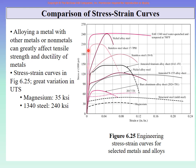Any curve that is high in the stress direction represents a very strong material. Going in the strain direction, any material with a very large strain value is highly ductile; materials with moderate strain are medium ductile; and materials with small strain values are much less ductile. In every curve there is both a strength and a ductility, and in engineering both are very important.